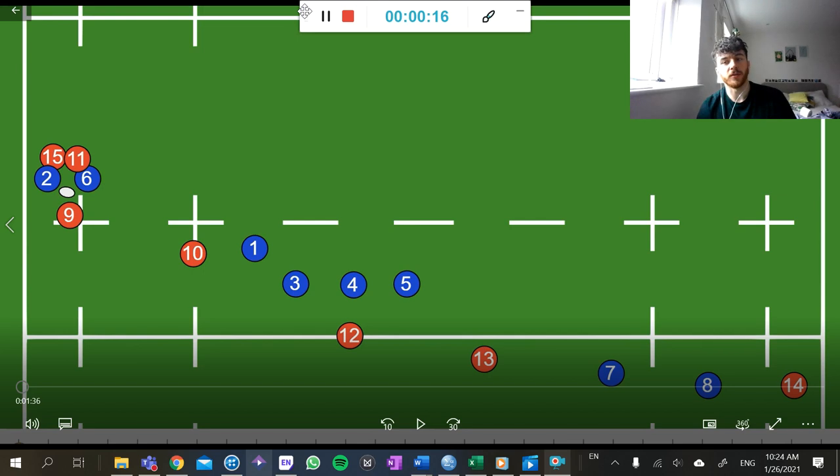This variation is going to be looking at a way to counteract line speed that the other team might apply when you're using the 2-4-2 system.